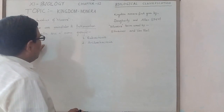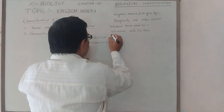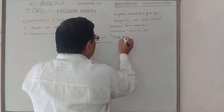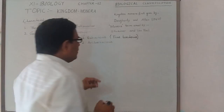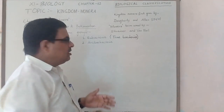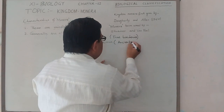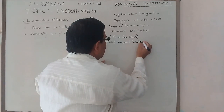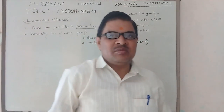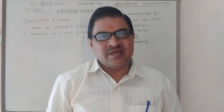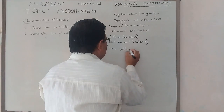Monera has many groups. The first is Eubacteria, called True Bacteria. The second is Archaebacteria, called Ancient Bacteria, because Archaebacteria is found in pharma fossils and is also called the Oldest Living Fossil.